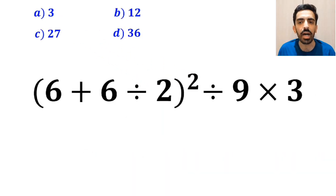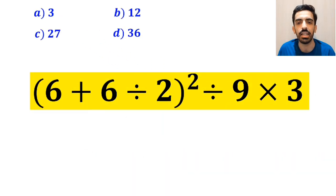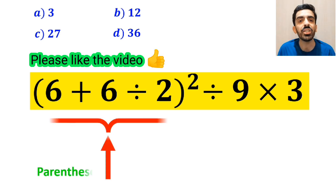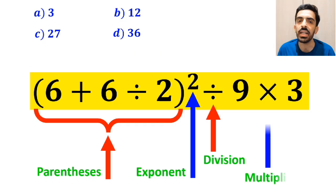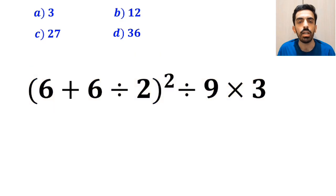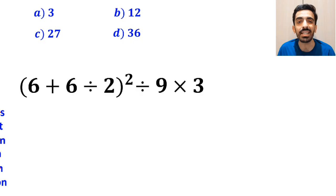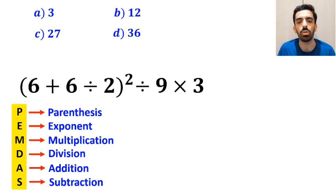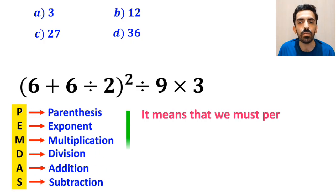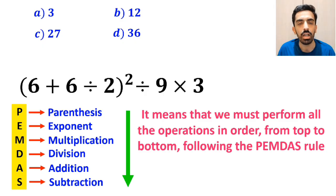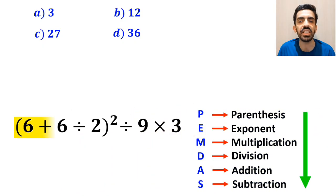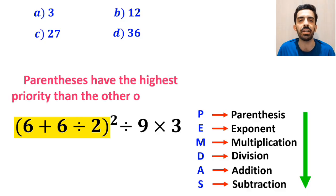Now let's go step by step and solve this question correctly. As you can see on the screen, in this expression we have parentheses, then an exponent, followed by a division sign, and finally a multiplication. To solve this question, we need to go step by step exactly according to the PEMDAS rule, performing all operations in order. First, we start with the expression inside the parentheses, because parentheses have the highest priority.